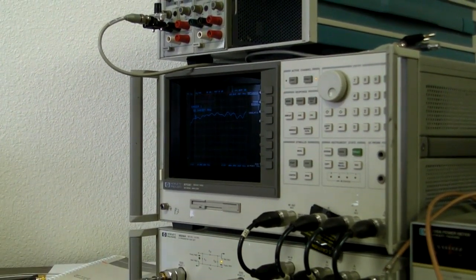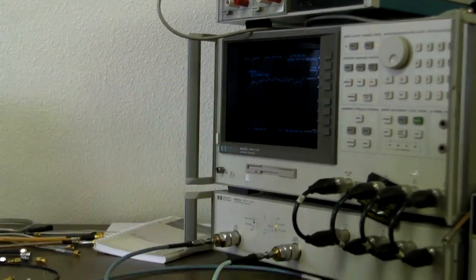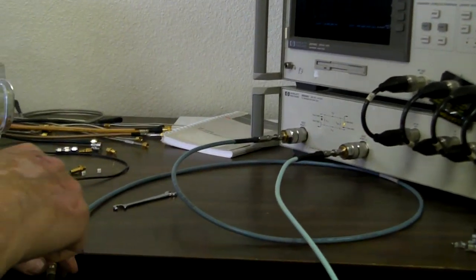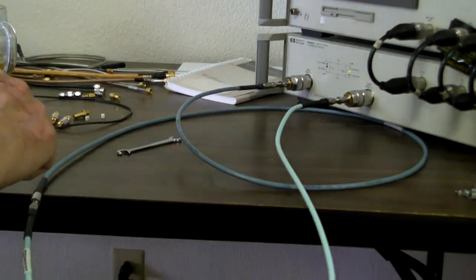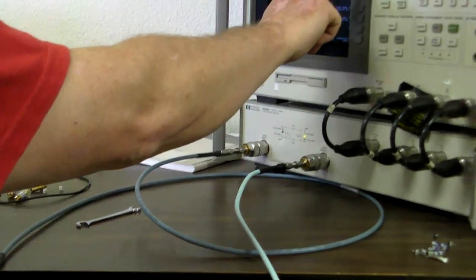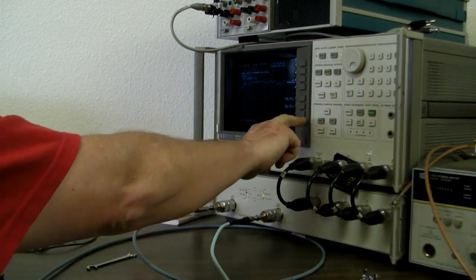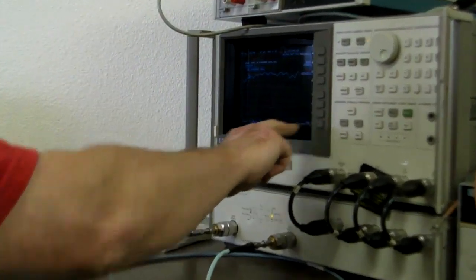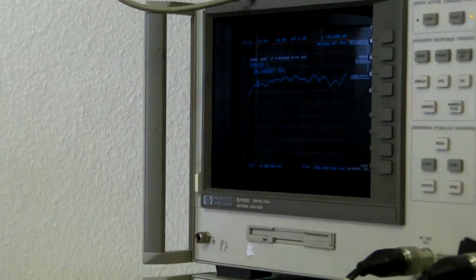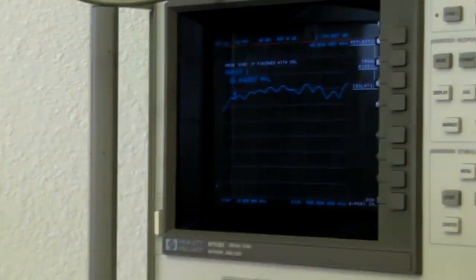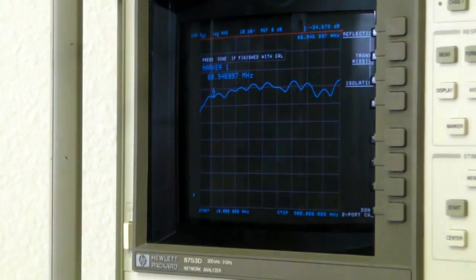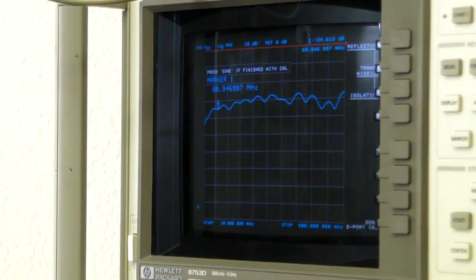So now it knows the reflection standard for both ports. It knows the through calibration for both ports. Since we're not going to do a really high-performance isolation measurement, we're going to tell it to omit the isolation terms and assume the instrument's perfect. This would only bother if we were doing like a duplexer where we wanted to see down to minus 100. We could take out the leakage terms of the instrument, which could be useful.